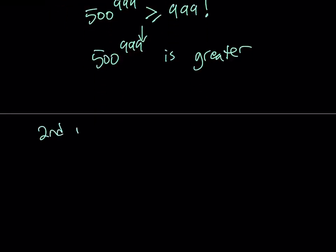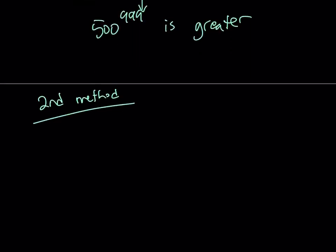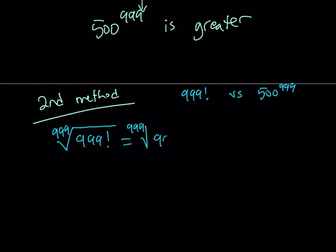Let's take a look at the second method. My second method is kind of different. Using my second method, I'm going to start off with something weird. We're comparing 999 factorial and 500 to the power 999, so it makes sense to take the 999th root of both sides. I'm going to take the 999th root of 999 factorial. If you expand it, you get the 999th root of 999 times 998, dot dot dot, all the way to 2, 1. That's a radical expression.